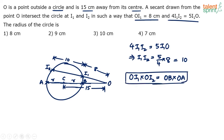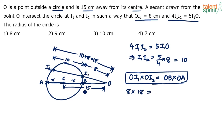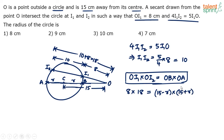Substituting the values: OI1 = 8, and OI2 = 8 + 10 = 18. Now OB: since OC is 15 and CB is R, OB = 15 − R. And OA: since OC is 15 and CA is R, OA = 15 + R. So we have 8 × 18 = (15 − R)(15 + R).